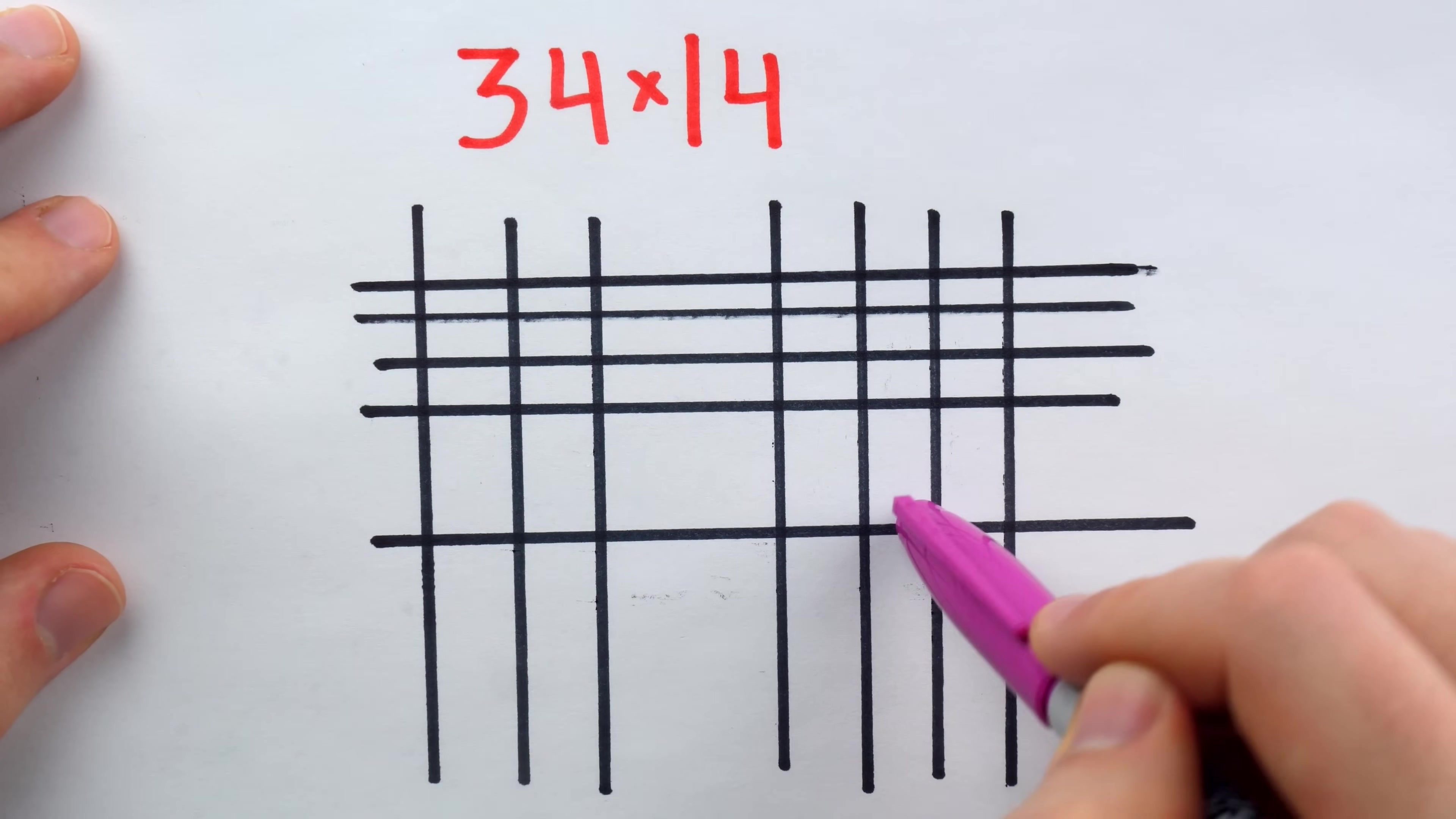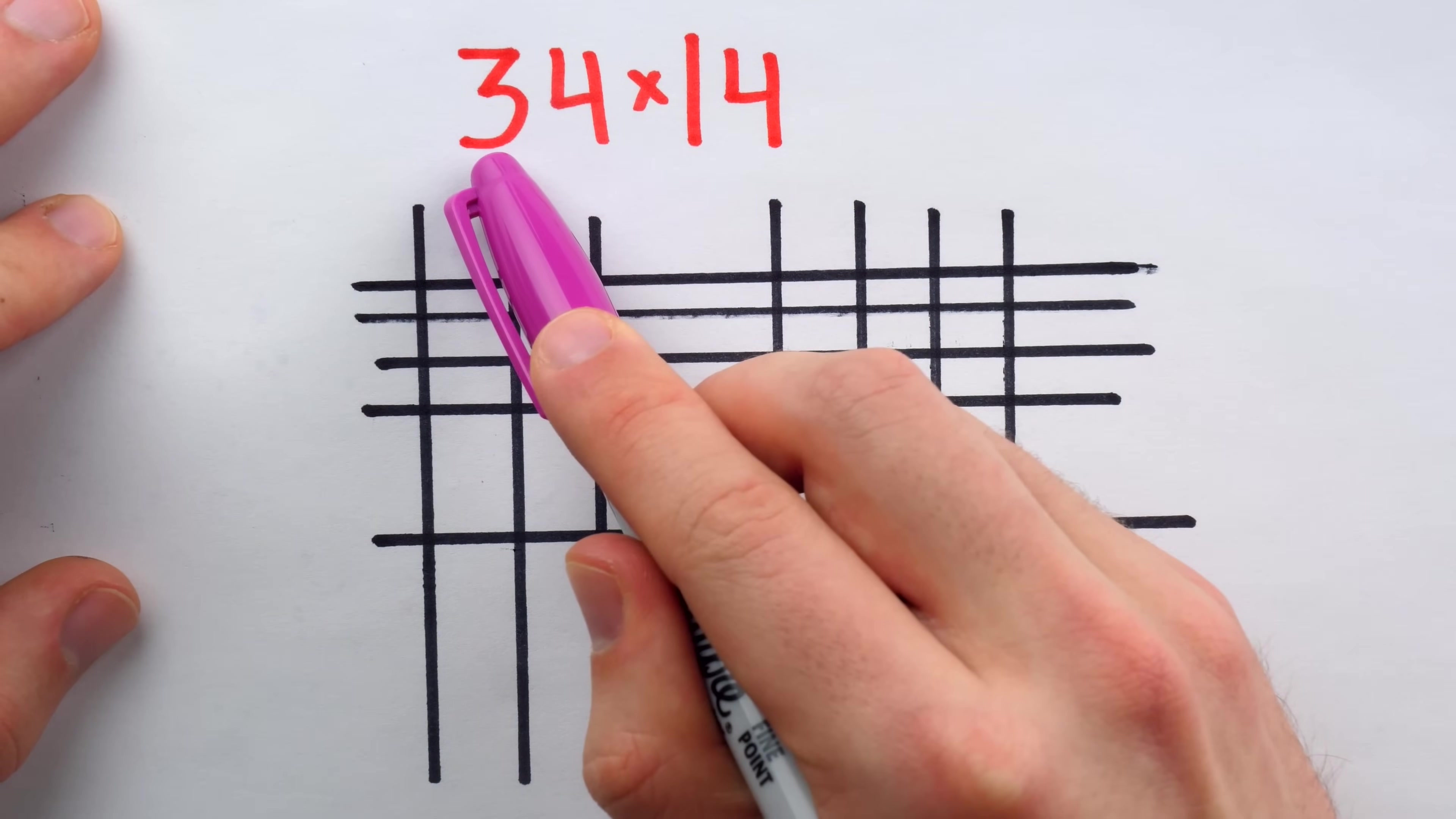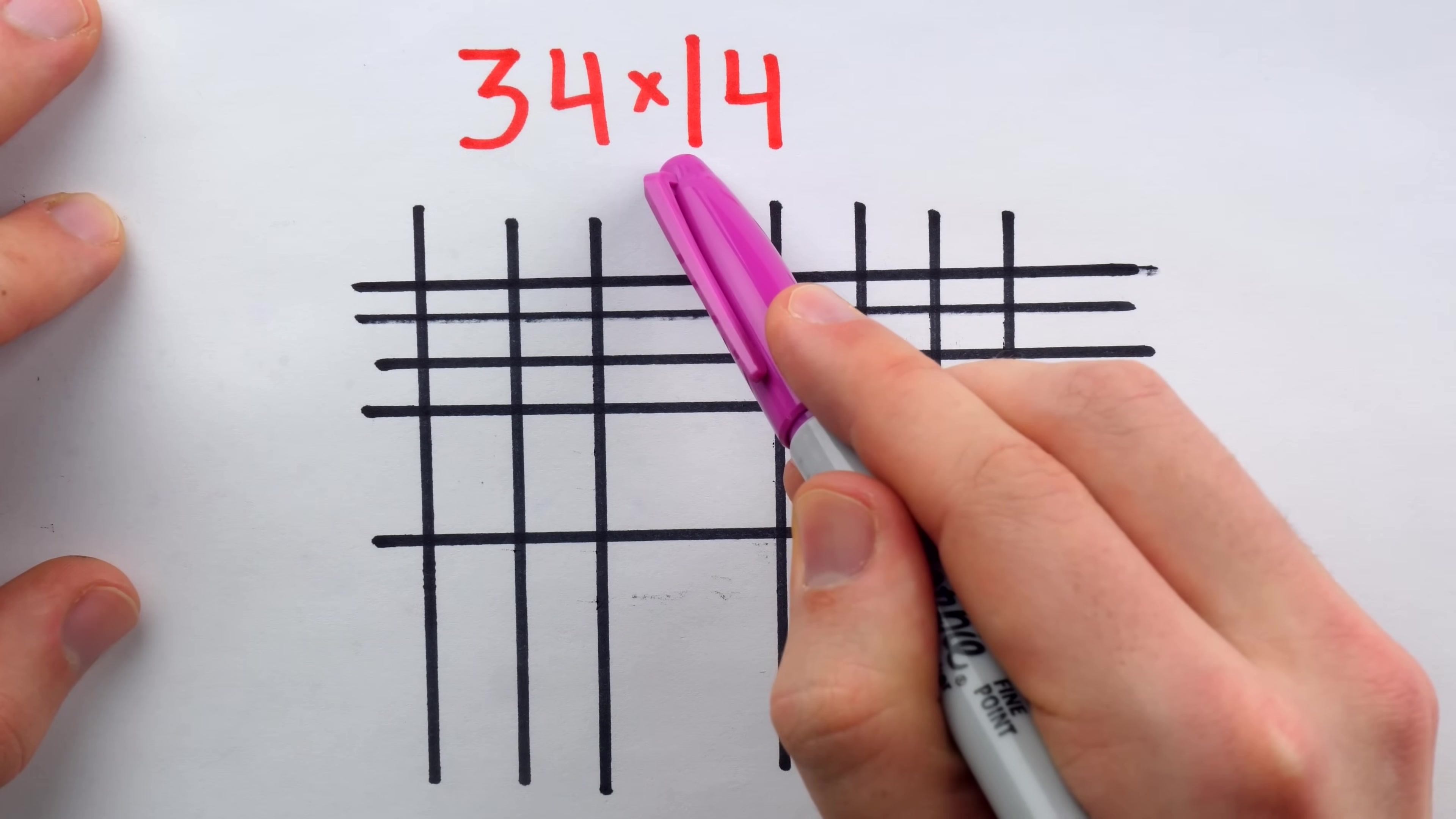And then, because of how we've organized the lines, this clump of intersections here is ones place times ones place, this intersection here is tens place times ones place, this intersection here is ones place times tens place, and this intersection in the corner is tens place times tens place.